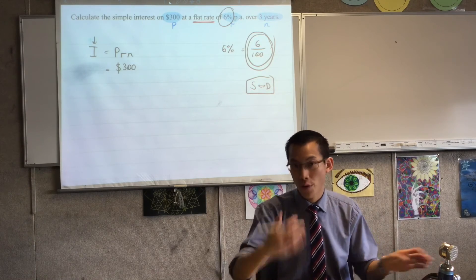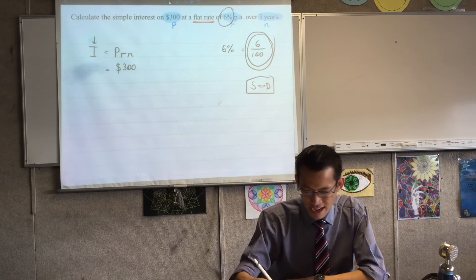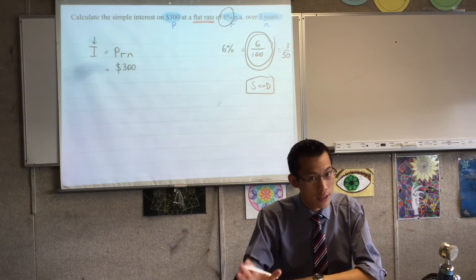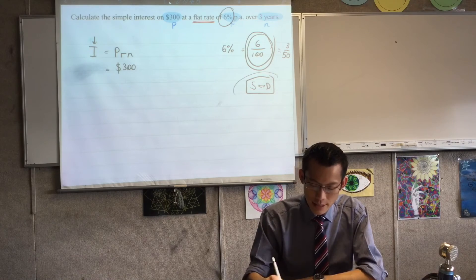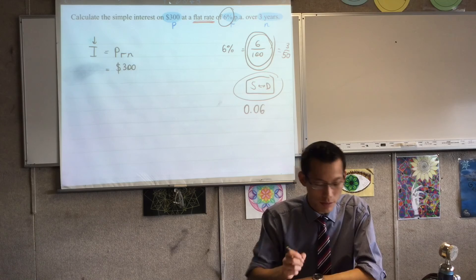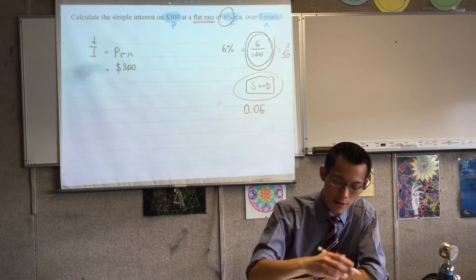And if you press that, it's going to convert your 6 over 100, which is a fraction, actually will probably give you 3 over 50, but we don't want that. We want it as a decimal. If you press your SD button, it will hand you 0.06, and that's the number I actually want.